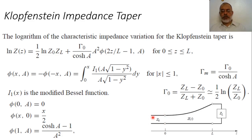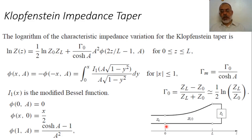We said that by using the small reflection concept, we can obtain a function for the reflection coefficient as a function of L over lambda. In the case of the exponential tapered section, the minimum length to obtain zero reflection coefficient is lambda over 2, and above that length the reflection coefficient has the form of a sinc function.